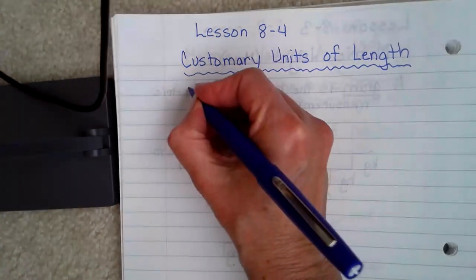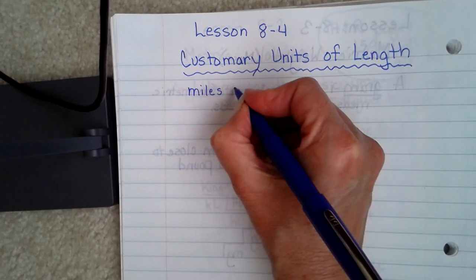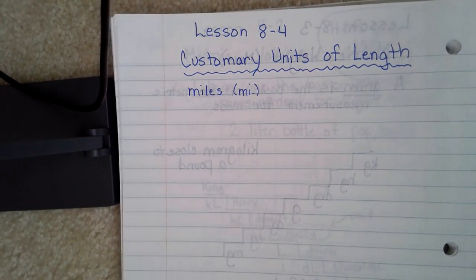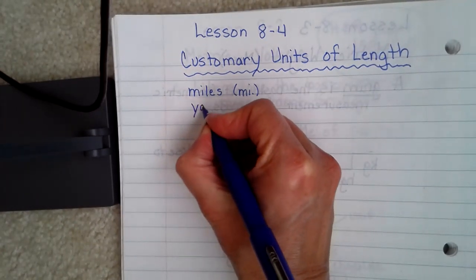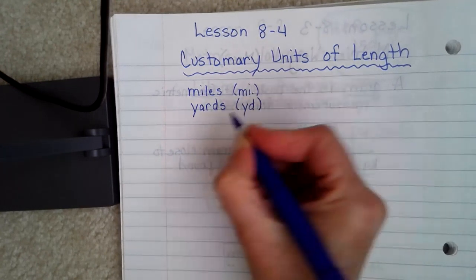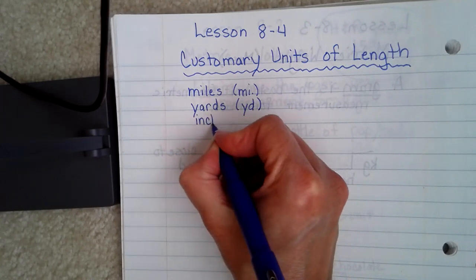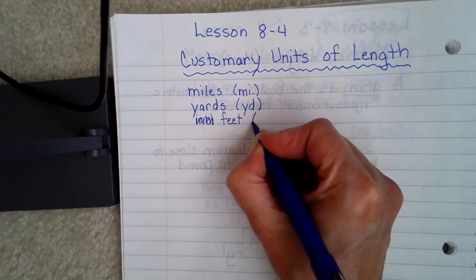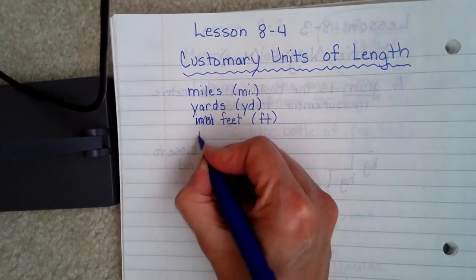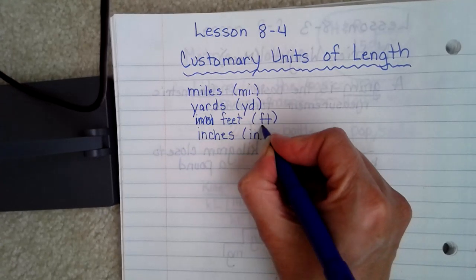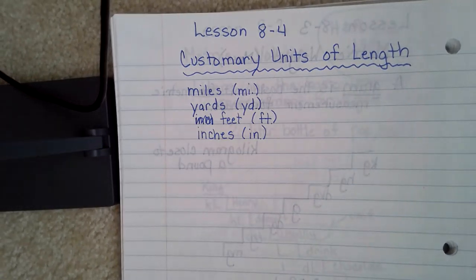The biggest unit we typically use is miles. I'm also going to put down the abbreviations, because in your homework you're going to see them and it'll be important to understand what they mean. The next largest are yards, abbreviated 'yd.' Going smaller, we get to feet, abbreviated 'ft,' and then our smallest one is inches, abbreviated 'in.' So that's largest to smallest.